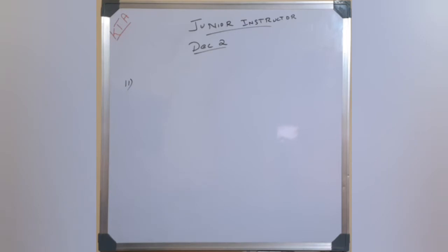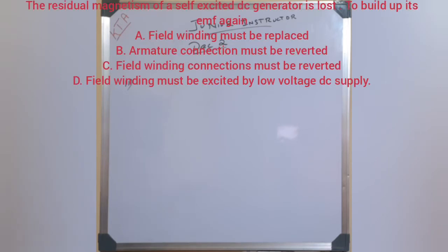The residual magnetism of a self-excited DC generator is lost. To build up its EMF again, the options are: field winding must be replaced, its armature connection must be reverted, field winding connection must be reverted, or field winding must be excited by a low voltage DC supply.